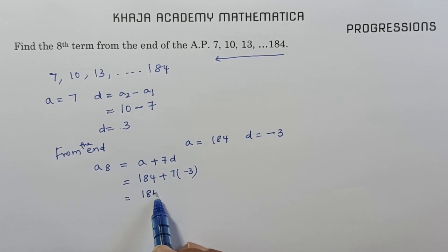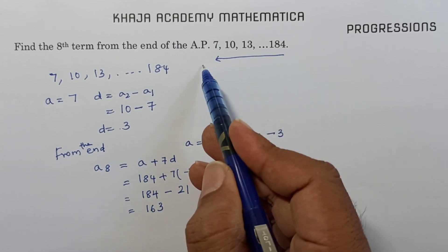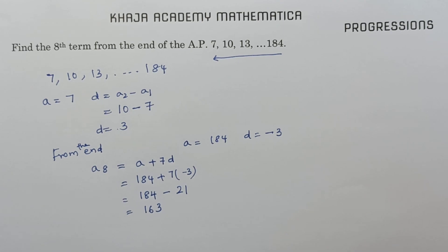So 184 minus 7 times 3, 21. So it will be 163. So 8th term from the end is 163.